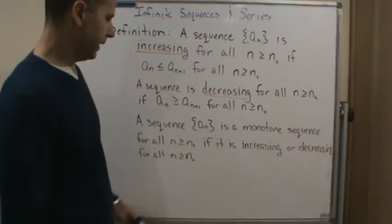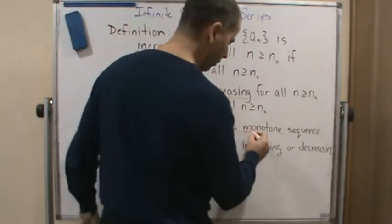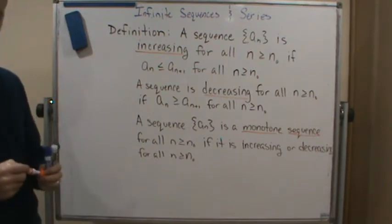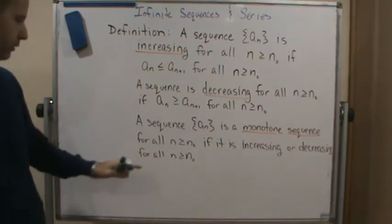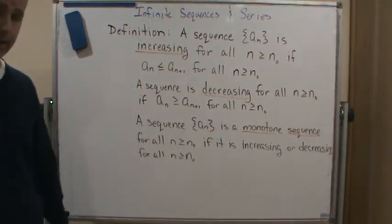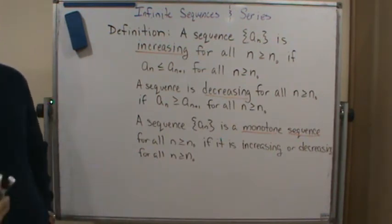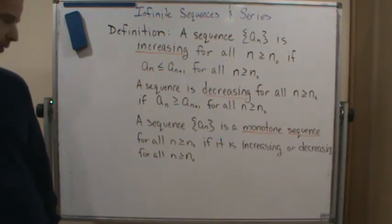A sequence a sub n is called a monotone sequence if for all values of n greater than or equal to some n naught, the sequence is either increasing or decreasing for n greater than or equal to n naught.